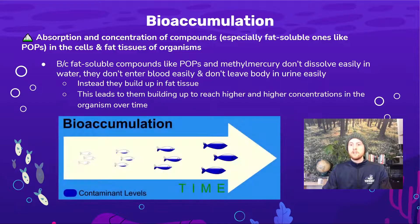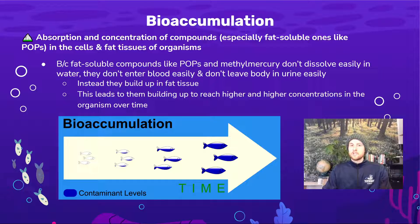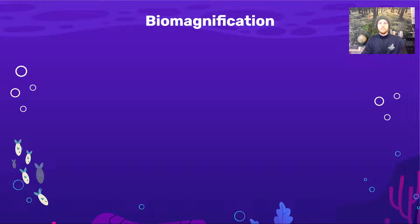This diagram helps us remember that bioaccumulation is the buildup of a contaminant in one specific organism over its lifetime. That's different from biomagnification, which occurs more in food webs. Biomagnification happens because of bioaccumulation, but it's a more macro-level effect — an effect that occurs over a whole trophic system or food system.